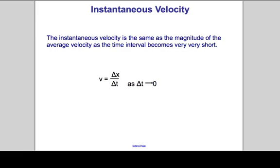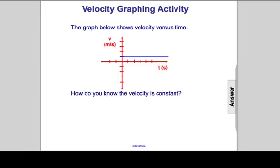That tells us the displacement per unit time over a very, very short interval. What we're going to do is look at graphs and interpret them to determine the velocities at points in time. The question is, how do we know that the velocity is constant? Let's look at a graph that has speed on the y-axis and time on the x-axis. This measures our speeds at various points in time.